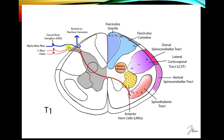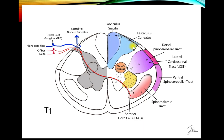These posterior column fibers come in without synapsing and head straight up to the brain. At this T1 level, sacral fibers are most lateral, then lumbar, then thoracic laid down medially. If we had a cervical cord section, we would see cervical fibers entering laterally as well — this is the columnar arrangement of the posterior columns.